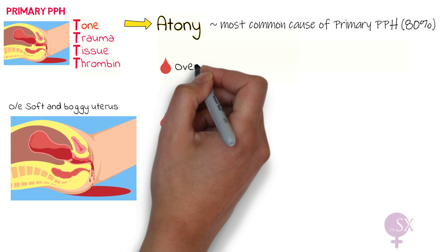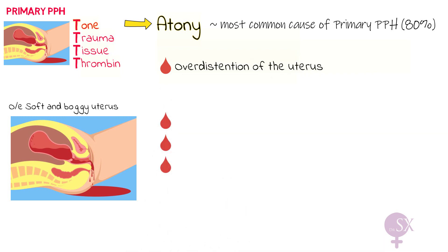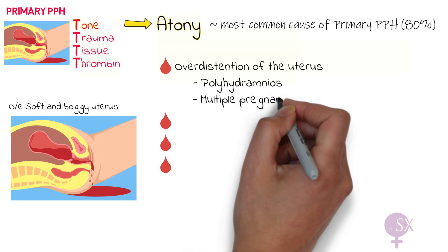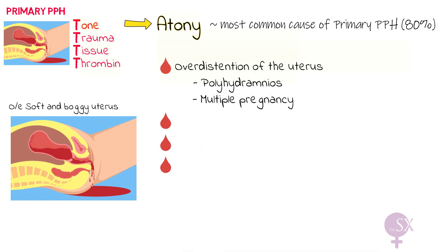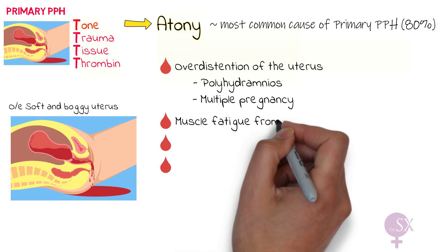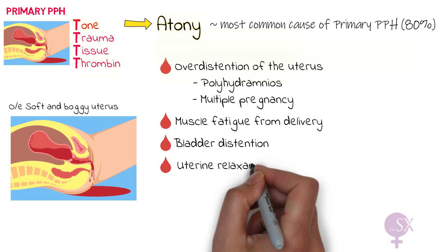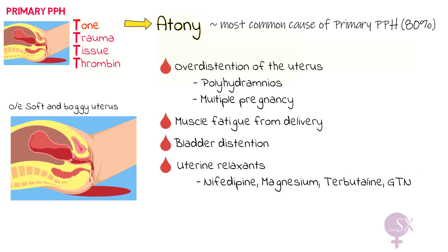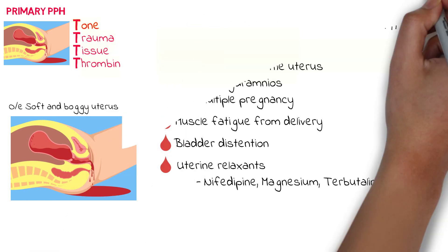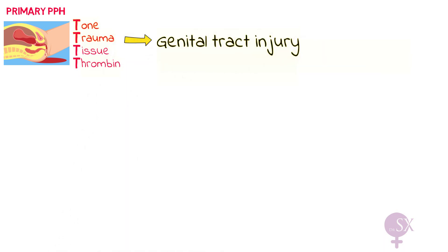Over-distension of the uterus occurs in polyhydramnios and in multiple pregnancy — with a twin or triplet pregnancy the uterus is distended, making it harder for the myometrium to contract. Next, muscle fatigue from prolonged labor, bladder over-distension pressing against the uterus, and uterine relaxants such as nifedipine, magnesium sulfate, terbutaline, and GTN also interfere with uterine contractions and result in atony.